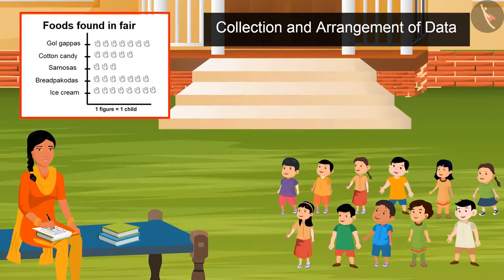Now tell me what should we buy more, samosas or bread pakoras? Bread pakora. Right. Now tell me how many kids love Gold Cafe? Seven. Very good. So kids, pictograph is also a very good way to represent data in an organized manner.